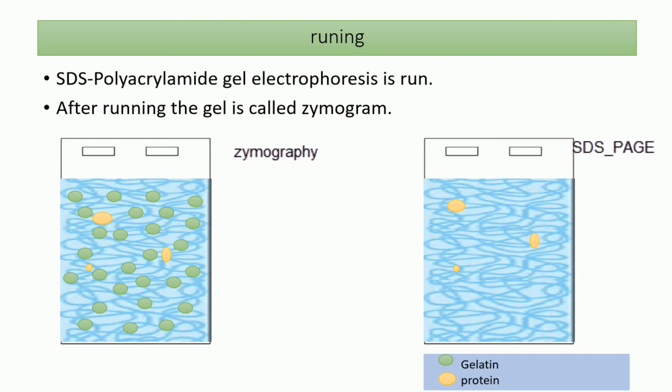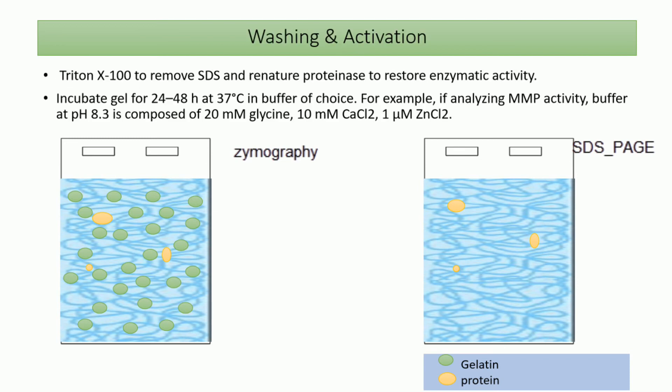In zymography, the gel after running is called a zymogram. In SDS-PAGE there is no need for an extensive washing step or activation step — you simply stain the gel. In gel zymography, however, we need to wash the gel to remove the remaining SDS, which allows the proteins to refold and restores the enzymatic activity of the protein of interest.